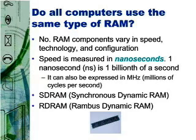RDRAM, Rambus Dynamic Random Access Memory, was first developed for the popular Nintendo 64 game system and then adapted for use in personal computers. RDRAM is more expensive than SDRAM and is usually found in high-performance workstations. RAM is configured as a series of DIPs soldered into a small circuit board.